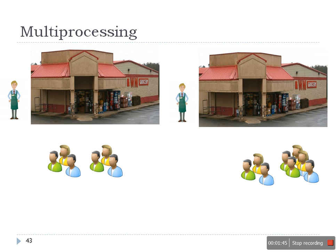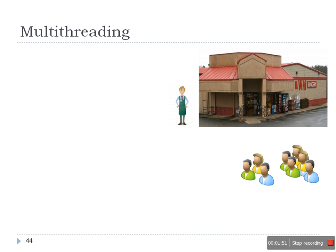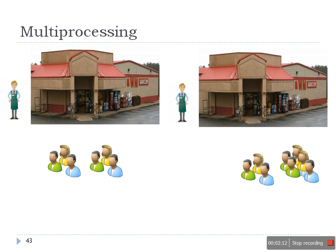Instead of opening a new shop, another solution is to hire another person for handling multiple customers. This scenario is actually equivalent to multi-threading — we are not creating a new process, we are just hiring another person, we are creating another thread of execution. If we consider this grocery store as a process, then this person is a thread.